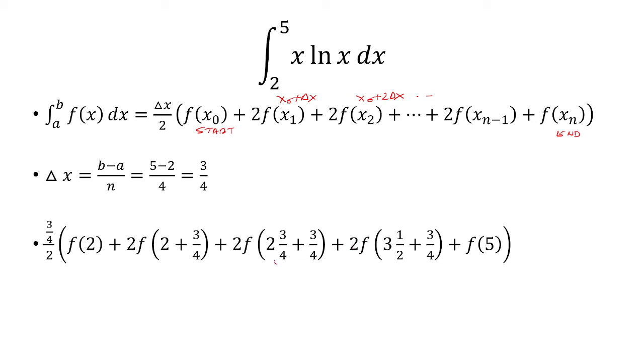Now 2 and 3/4 plus 3/4 is 3 and a half, or 7/2. We add another 3/4 to that, and then finally add another 3/4 to get to f(5).